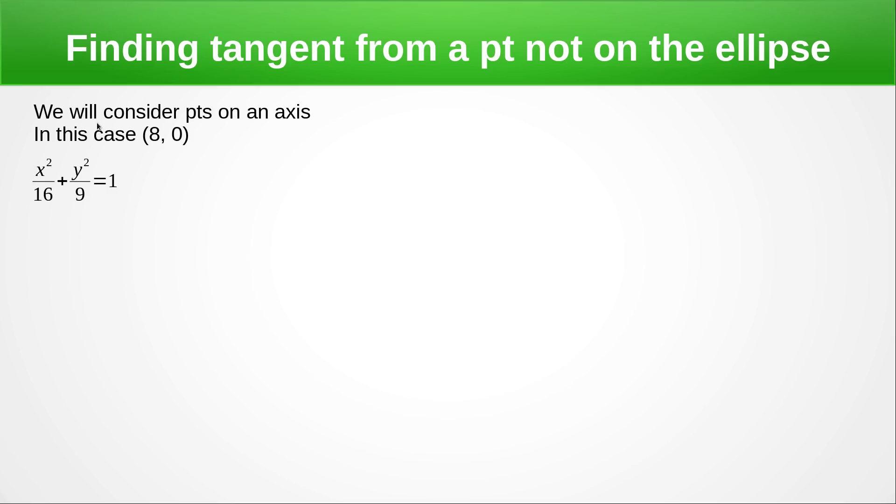You can use exactly the same technique with a point that is not on the major minus axis, it's just that the algebra is much more difficult and we don't really have to consider doing that. So here we've got our ellipse and we've got the point (8,0).